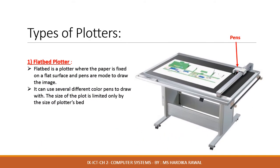The flat bed plotter is a plotter where the paper is fixed on a flat surface and pens are moved to draw the image. This plotter can use several different color pens. The size of the plot is limited only by the size of the plotter's bed.